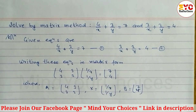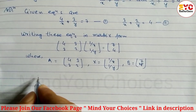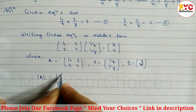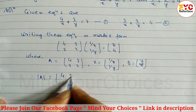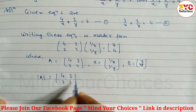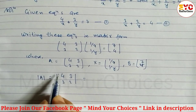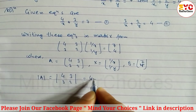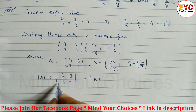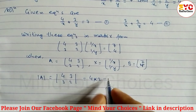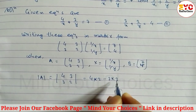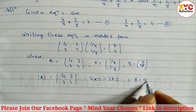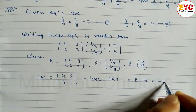Now we have to find the determinant of A to check whether A is a singular or non-singular matrix. The matrix is [[4, 3], [3, 2]]. We multiply the main diagonal: 4 × 2 = 8, minus the non-diagonal: 3 × 3 = 9. So the determinant is 8 − 9 = −1.